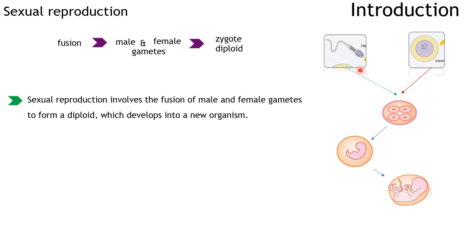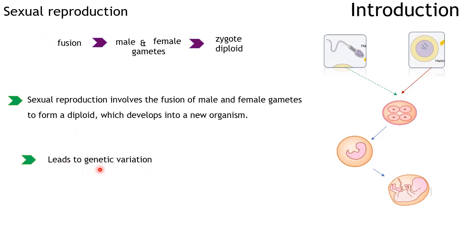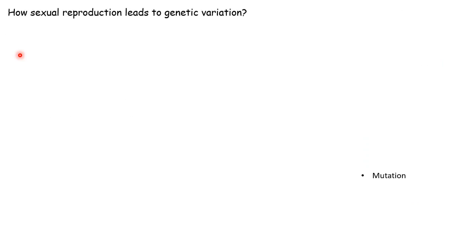In sexual reproduction, the offspring has half of the genetic information from the father and half from the mother. When these two fuse together, they create a whole new cell that looks different — though it may share some parent characteristics, its genetic information due to this mixing will be completely different. That is why sexual reproduction leads to genetic variation.